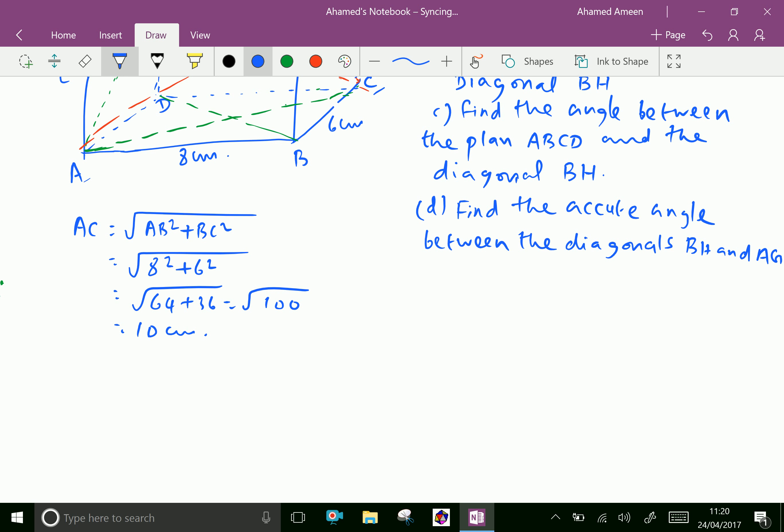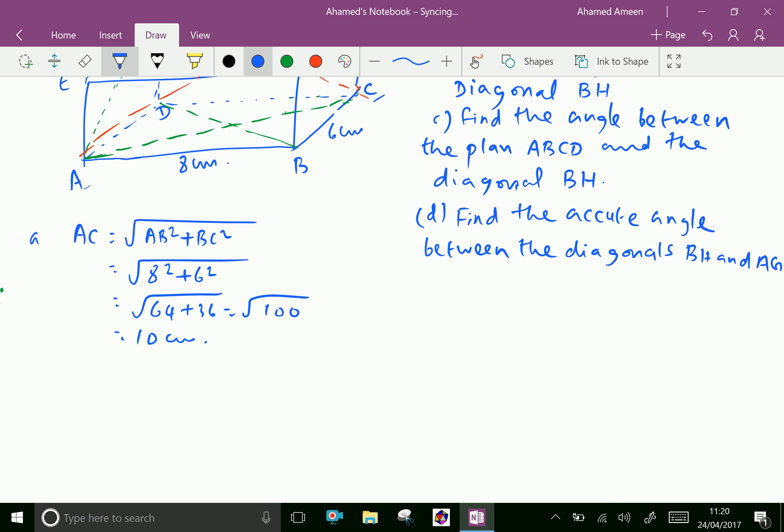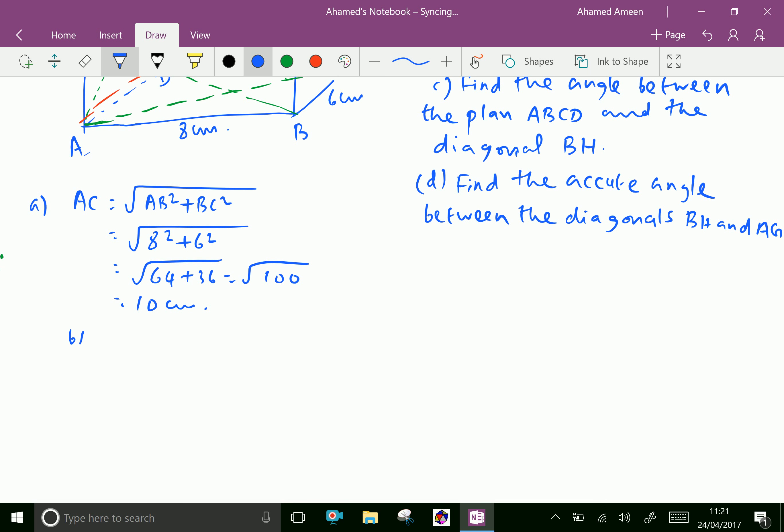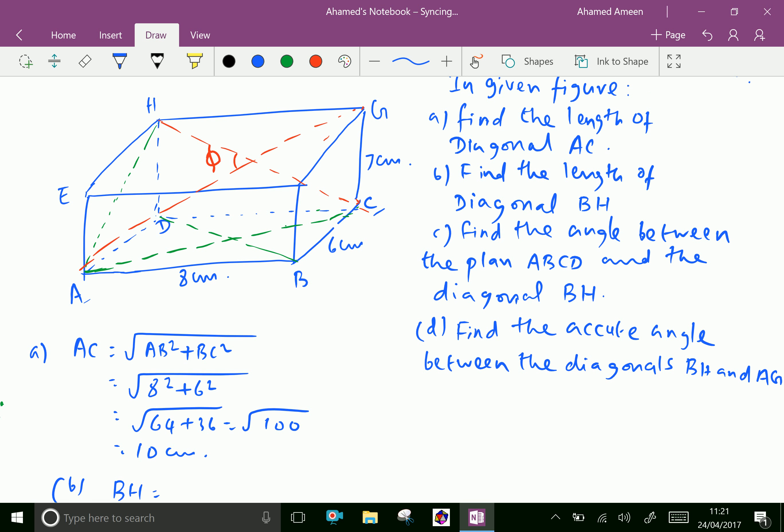Now for BH, BH equals... here in the figure BH is the longest diagonal. We can calculate by using the square root formula.